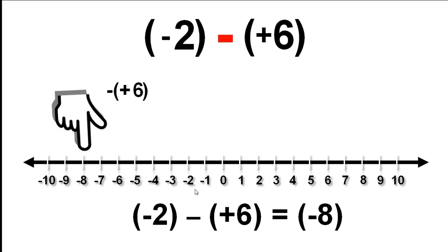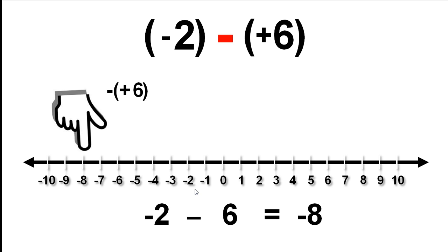Now we can read the answer off the number line: negative 8. We wouldn't normally write out the calculation like this, so we are going to remove the brackets and positive signs inside the brackets. Here is our final correct calculation.